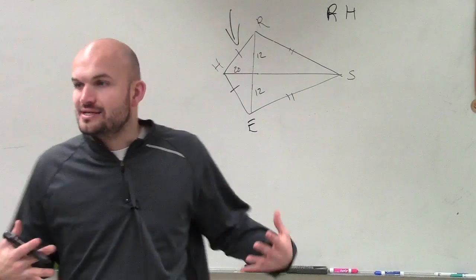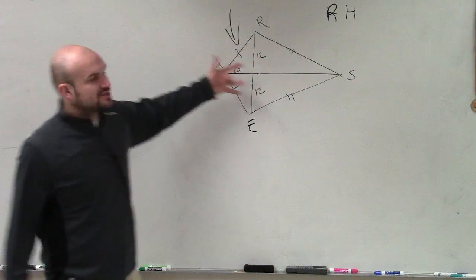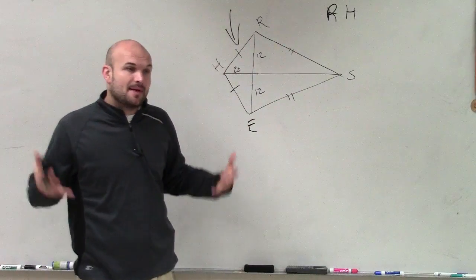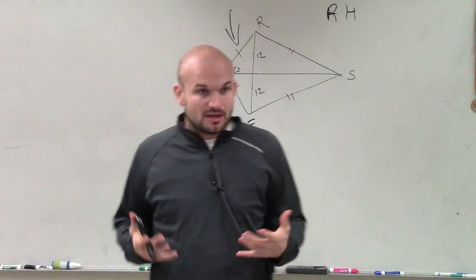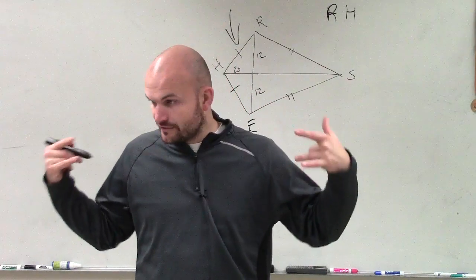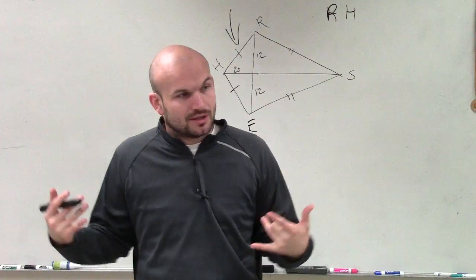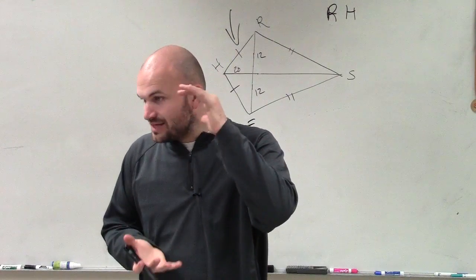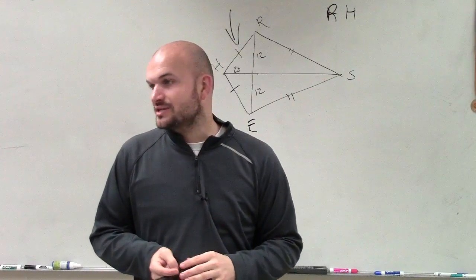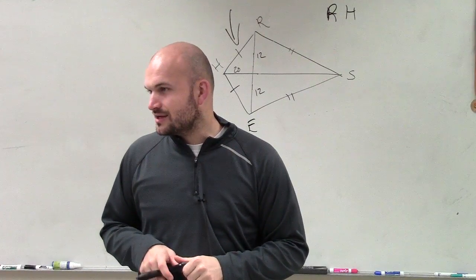So we need to find RH, which is right there. Whenever we see this and it tells us that this is a kite, we have two pairs of congruent sides. None of them are parallel, so we know we have a kite. Now, there's a couple things that happen with a kite. We know that when we have a kite, we have those two pairs of congruent sides. We do not have parallel sides, but we know we have at least a pair of opposite angles that are congruent.